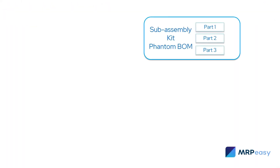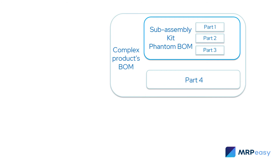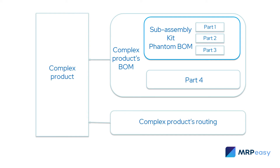Kits may also be used in a multi-level manufacturing order. Historically, this functionality is also known by the name Phantom Bomb. For example, a sub-assembly may be a kit and it does not require any operation to complete. This can make it easier to organize data of complex product configurations.